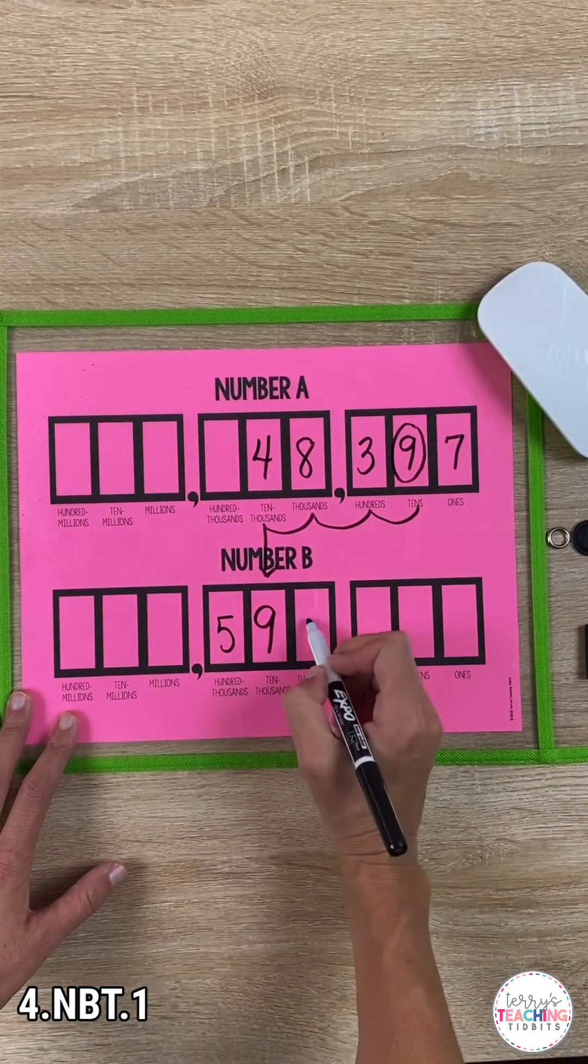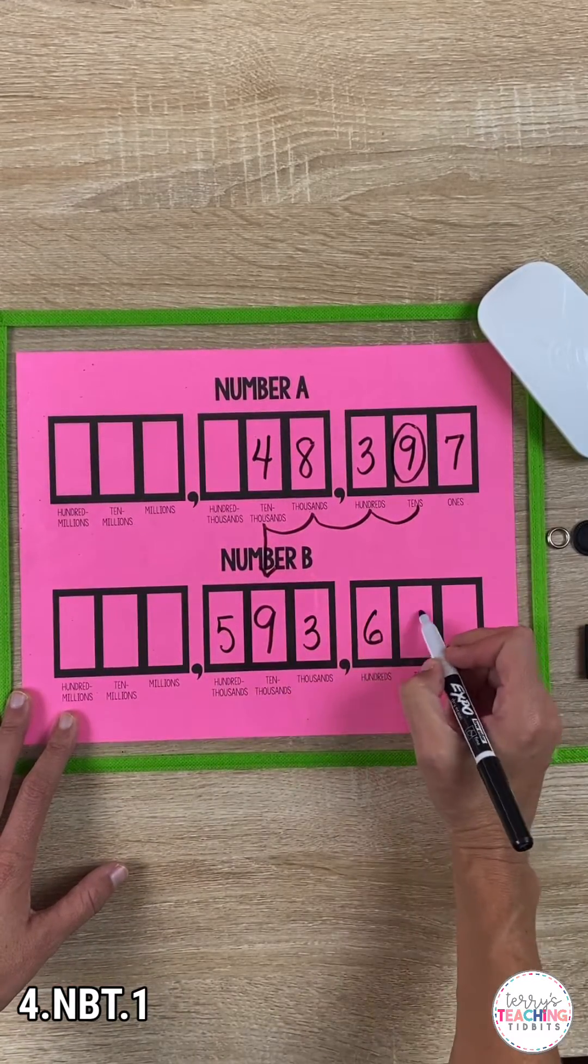Once they've placed a 9 in the ten thousands place, they can fill in the rest of the digits with other numbers.